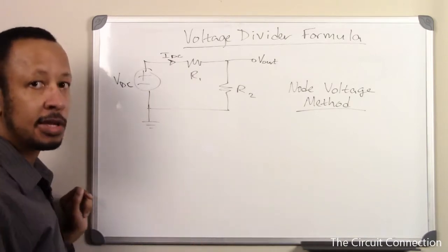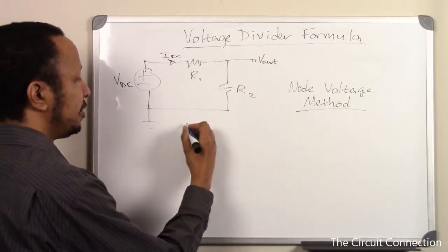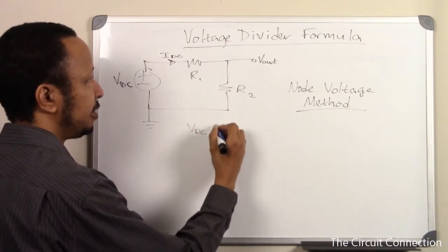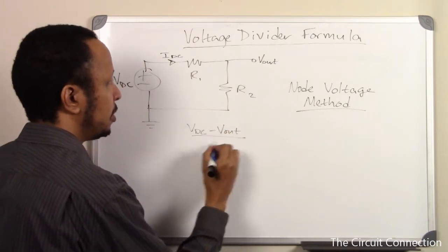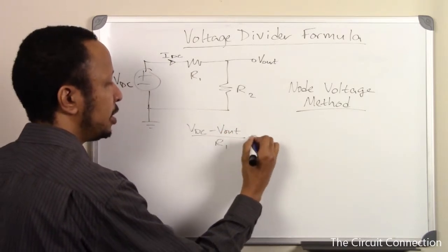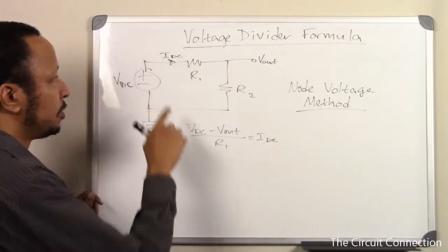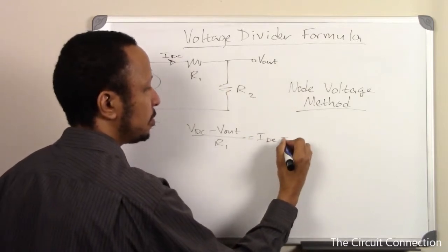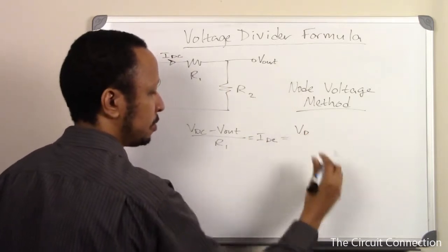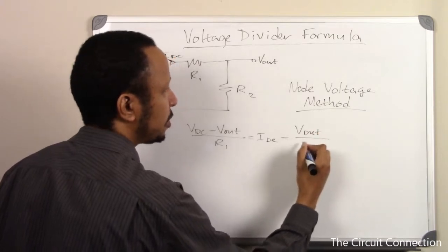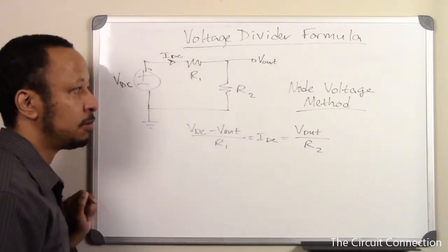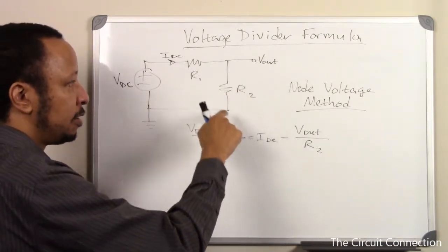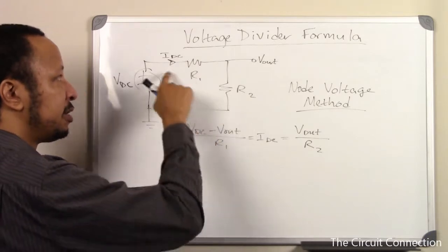So first thing we're going to take notice of is that VDC minus Vout over R1 equals IDC. And what also is true is that Vout over R2 also equals IDC, because Vout divided by R2 gives us IDC. It's the same current there.